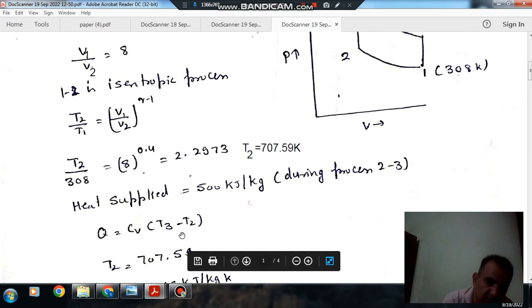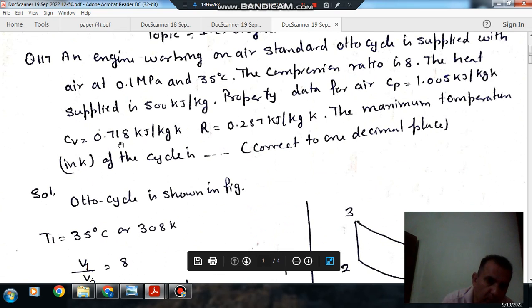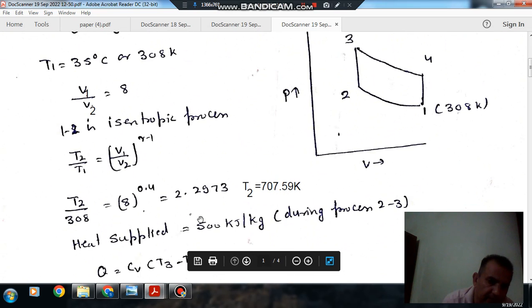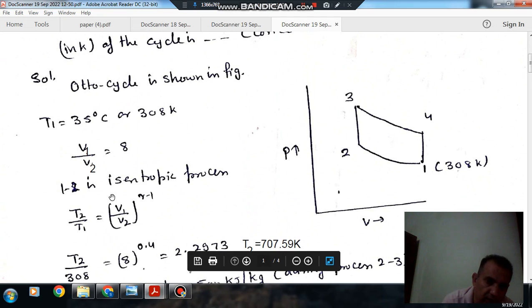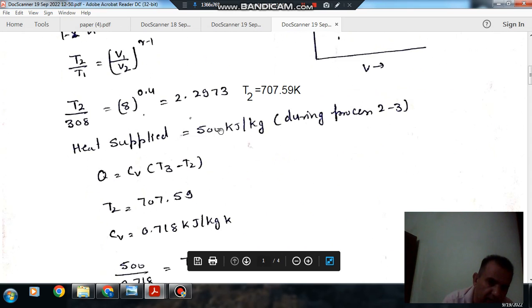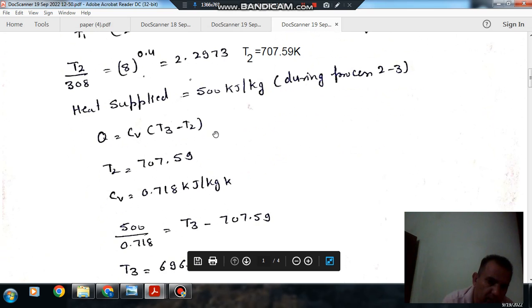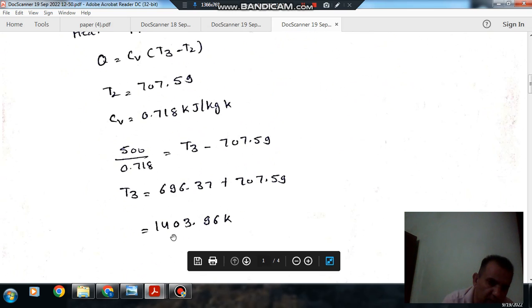So cv is your 0.718 and T3 is your T3 we have to find out, and T2 is your 707.59, and Q is your 500 kilojoule per kilogram. So T3 comes out as, putting these values, so 500 divided by 0.718 equals T3 minus 707.59, T3 comes out as 1403.96 Kelvin.